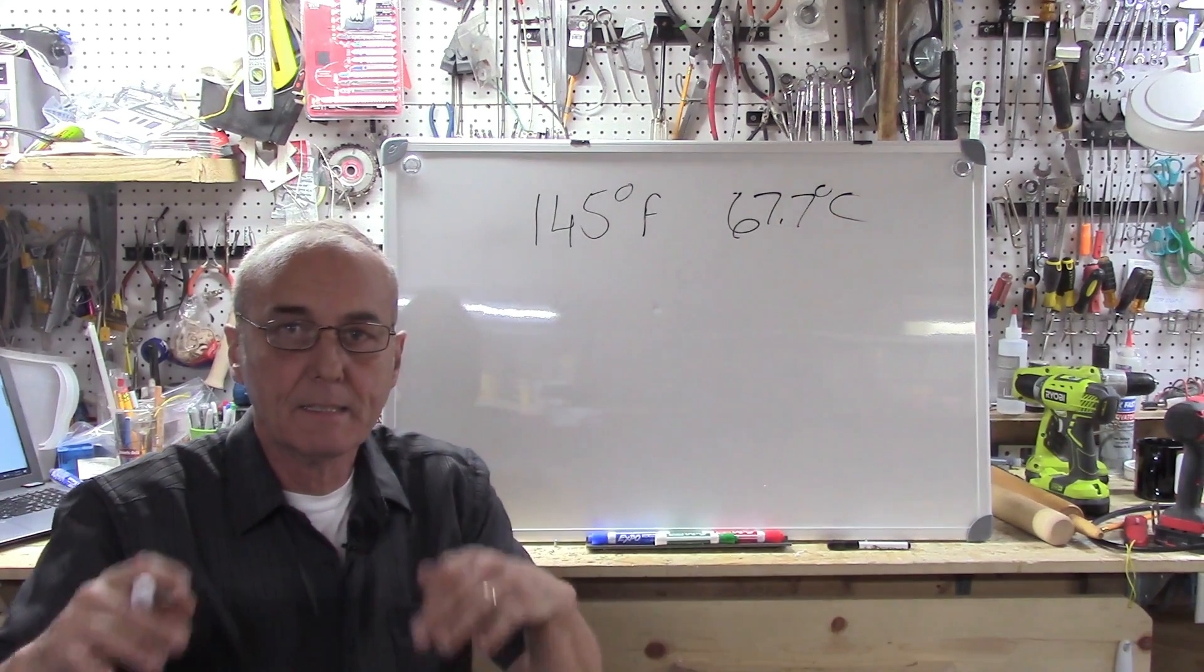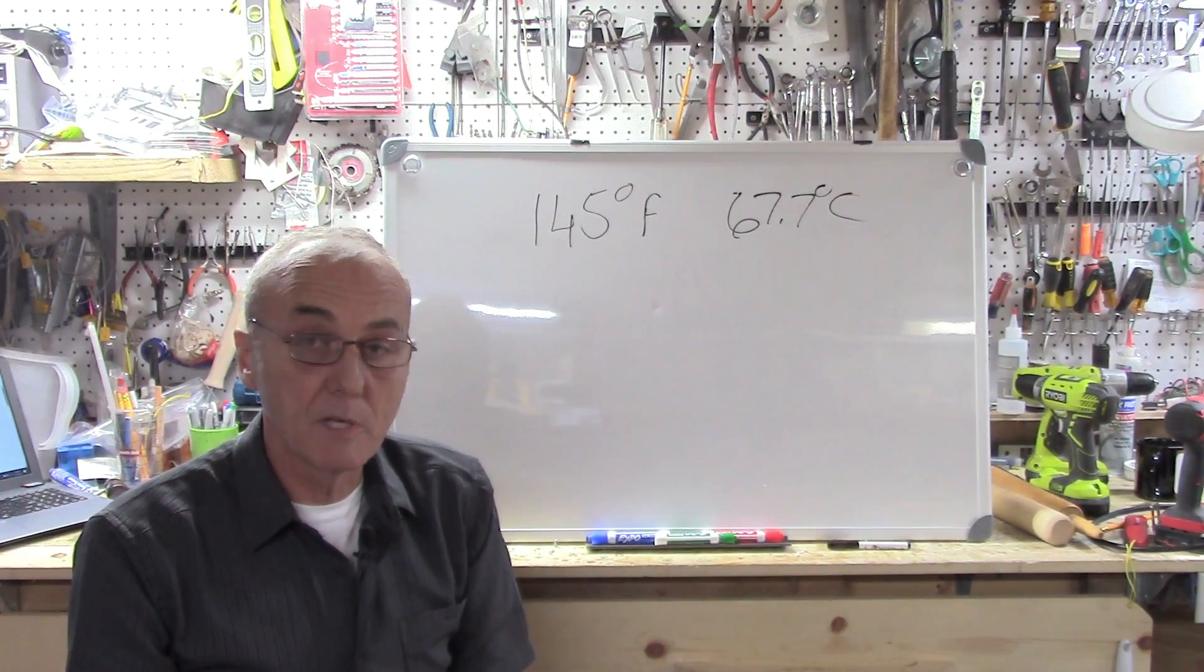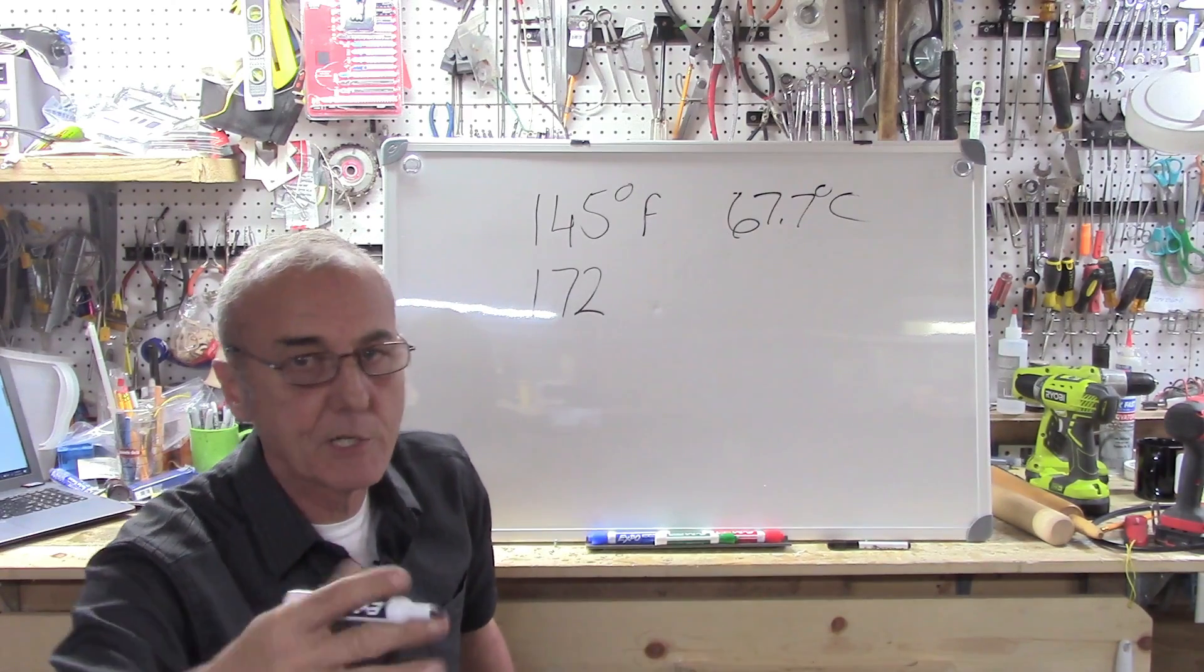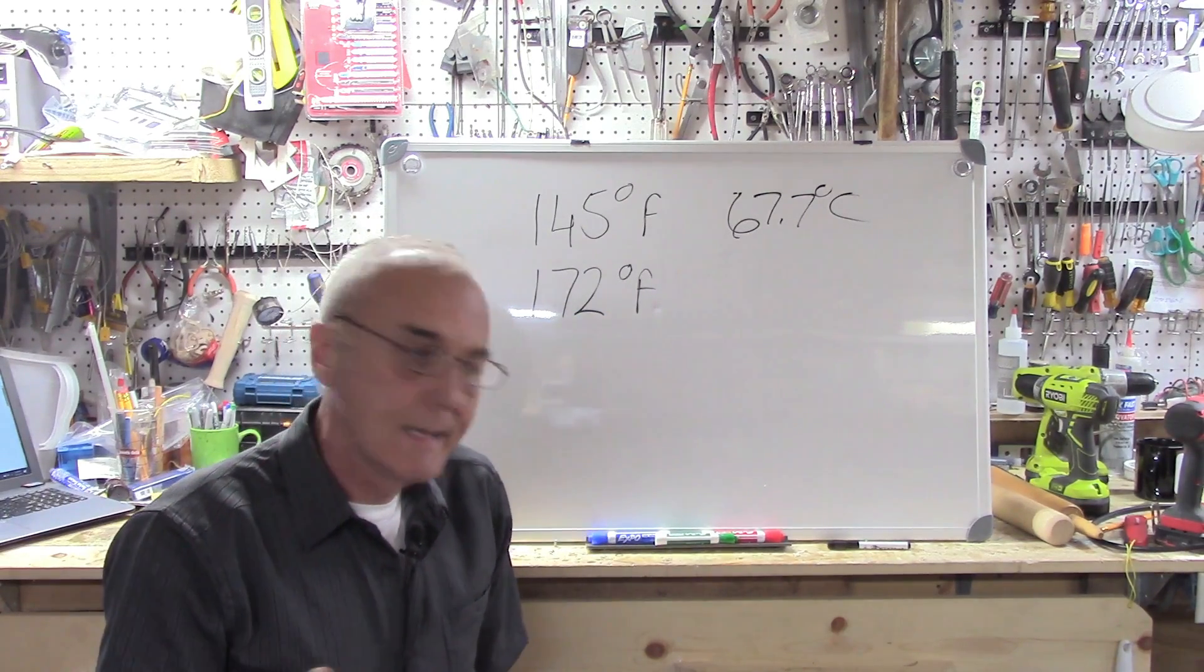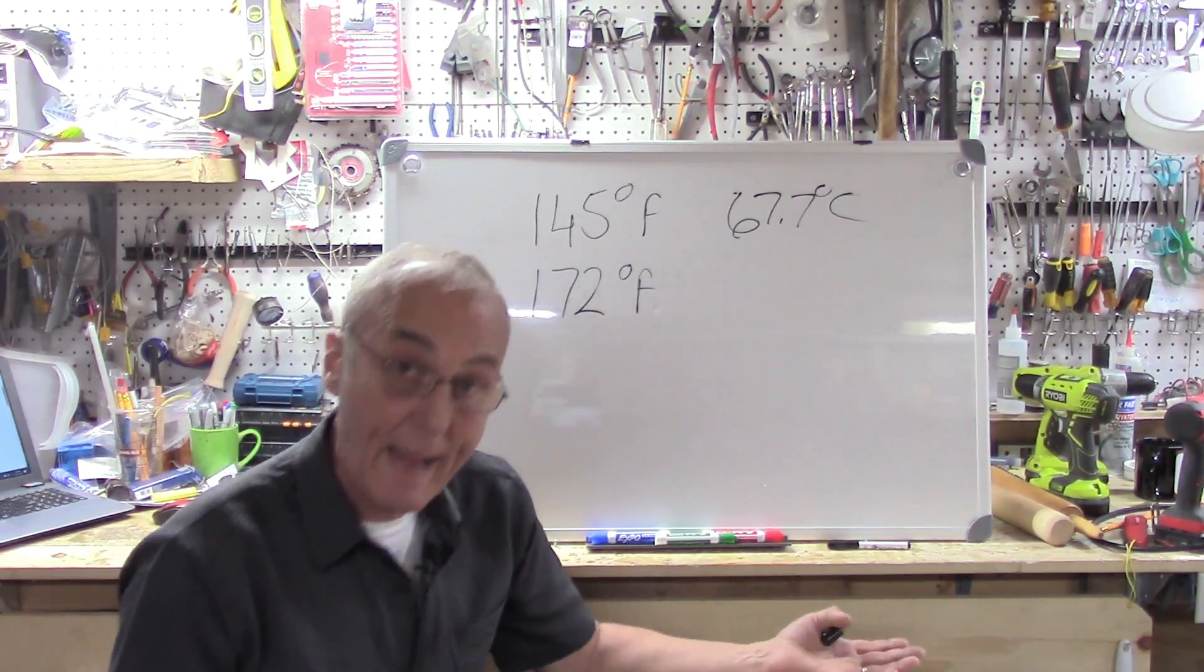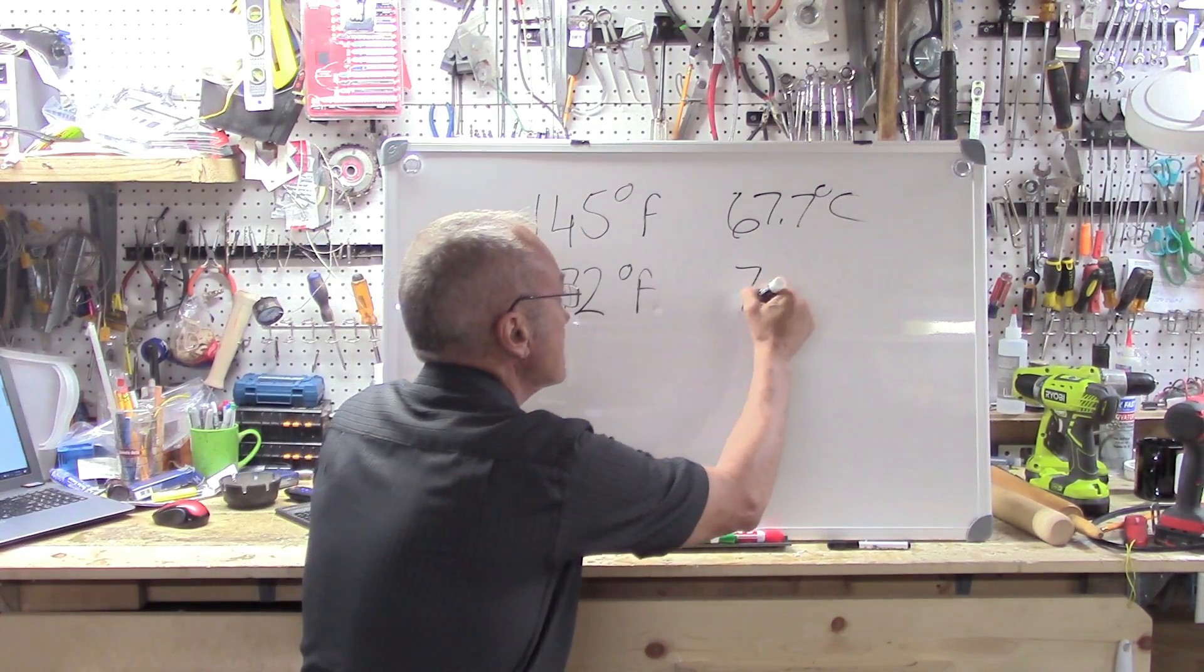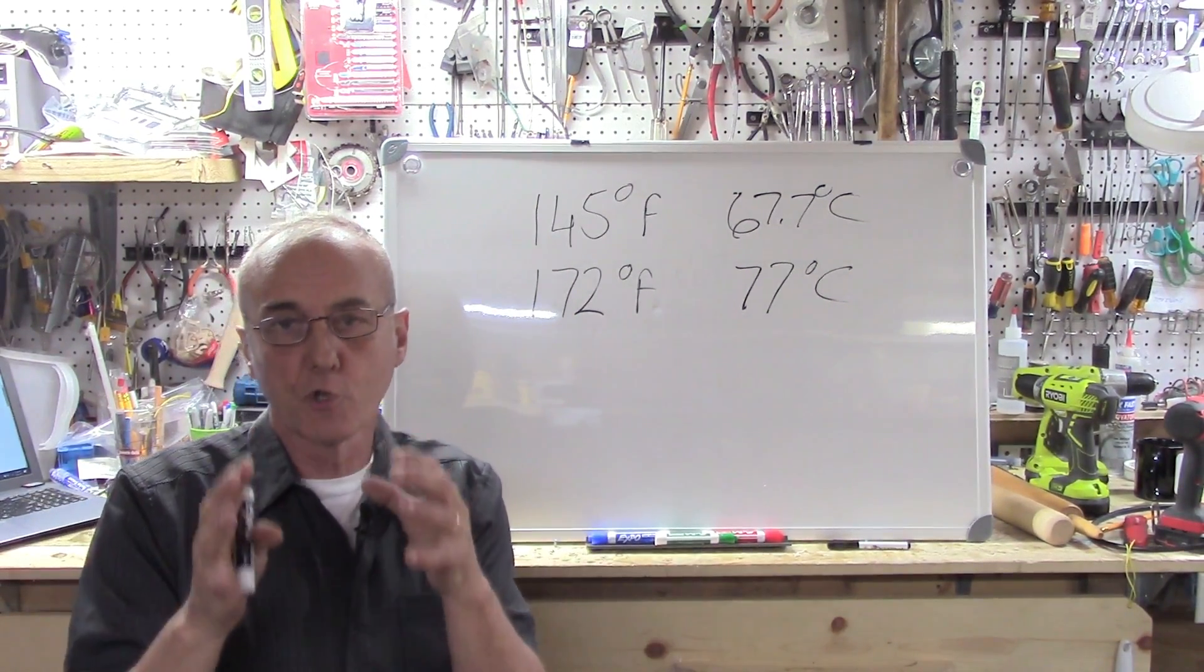We know that 145 degrees Fahrenheit is the vaporization point of methanol - that would be actually 67.7 degrees Celsius if you're working with that scale. We know that the vaporization point, now we're talking about sea level, the vaporization point of ethanol is 172-ish, depending on what literature you read. 172 is a really good figure. That equates to 77 degrees Celsius.